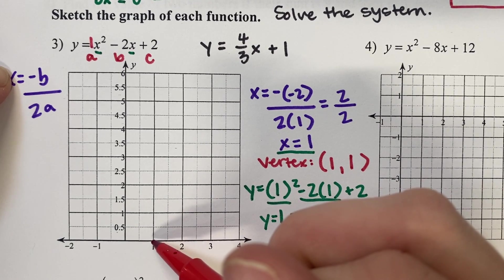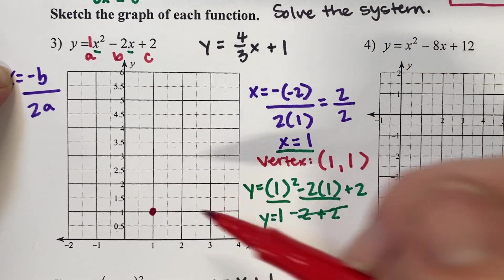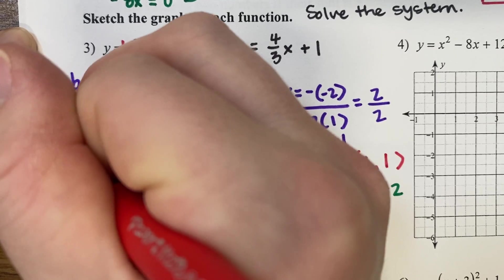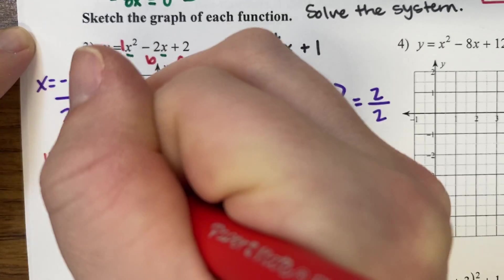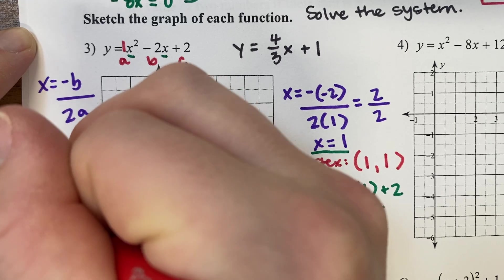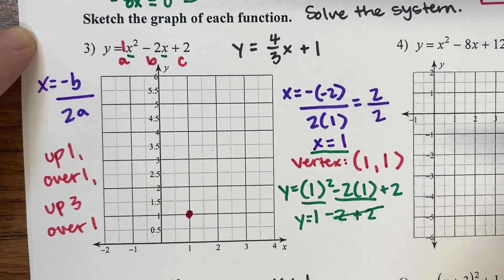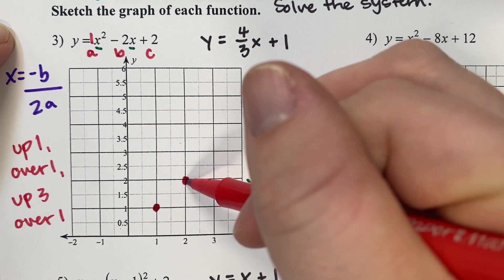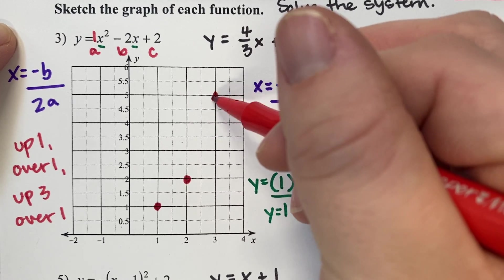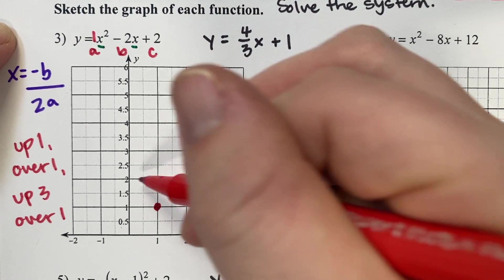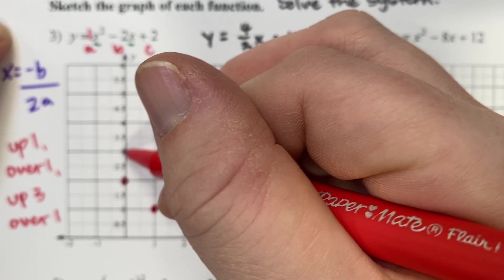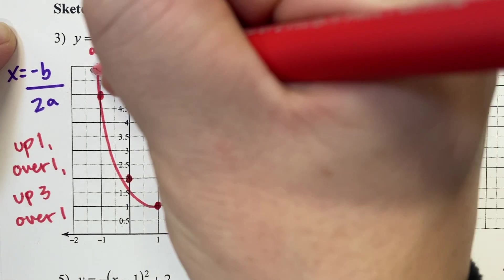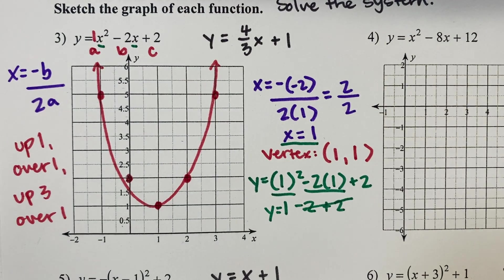Find 1 on your x-axis and up to positive 1 on your y-axis — that's the vertex. Now use the pattern: up 1 over 1 on each side, and then up 3 over 1 on each side. So up 1 over 1, then from that point up 3, over 1 — same thing on the other side. Connect those points and that's our quadratic parabola.